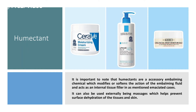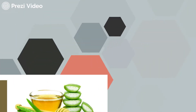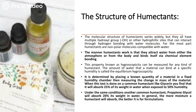Also humectants are used externally — for example in massages — which helps prevent surface dehydration of the tissues and the skin. Considering the humectant's important role in chemistry, because of the chemical processes which take place when they are being used, they are largely used by the process of osmosis. When in a solution containing humectants, osmosis takes place as hydrogen bonds form with water molecules. Once this takes place, the tissues are filled out and appear less dehydrated. So humectants work by the action of osmosis.